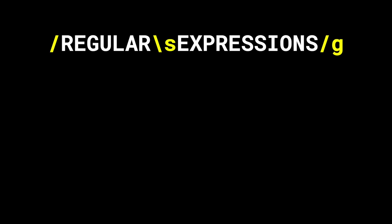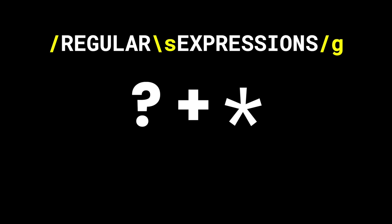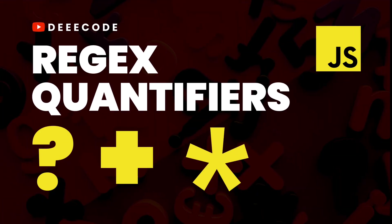In regular expressions, there are special characters like the question mark, the plus sign, and the asterisk sign, which can be used for quantifiers in the patterns that you create. Sometimes it can be confusing how these quantifiers are different. In this video, I'll be using examples to explain the difference between these three quantifiers.